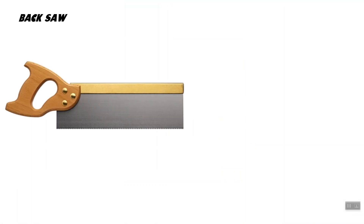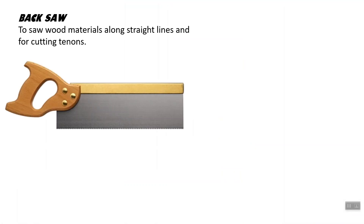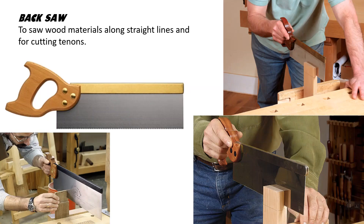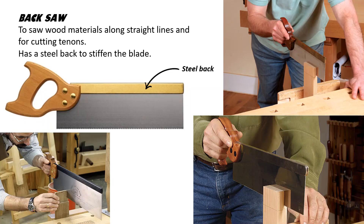Another type of saw is the back saw. The difference is that the back saw has a metal strip on the top to keep the blade straight. It is used to saw wood materials along straight lines and for cutting tenons. For small parts, we use the tenon saw — that is the back saw. It is more precise than the hand saw. It has a steel back to stiffen the blade, which keeps the blade straight and avoids the blade from becoming flexible. So it can cut precise straight cuts and smaller cuts onto wood, and sometimes onto plastic also.